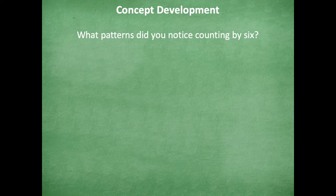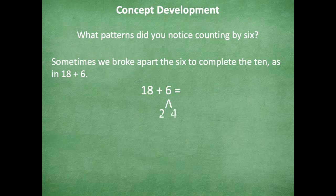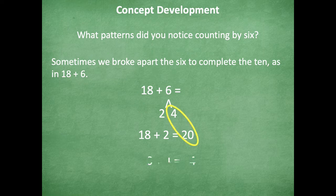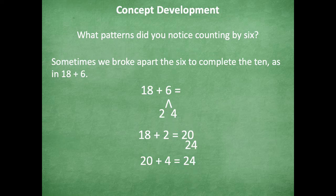Okay, so what patterns did you notice counting by six? Yeah, so sometimes you broke apart the six to complete the ten, as in like 18 + 6. So in that last example that we did, we broke apart the six to be able to make things a little bit easier for us to add. And then, oh, so here's how we did this one. So we broke apart the six. So 18 and two make that a nice friendly 20. And then 20 + 4 = 24. So 18 + 6 = 24, which this is also the same as six times four.